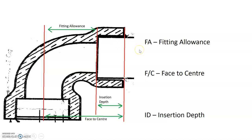We have three terms here. We have FA, the fitting allowance, which is from where the pipe stops inside the fitting to the centerline of the other outlet.